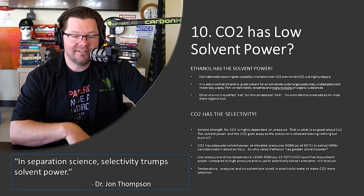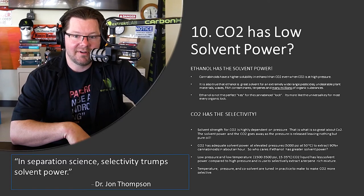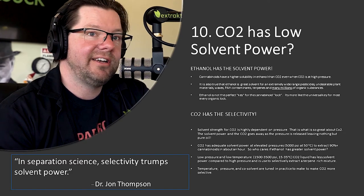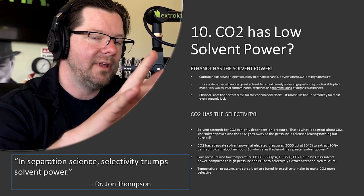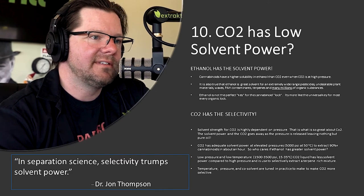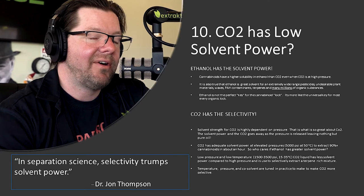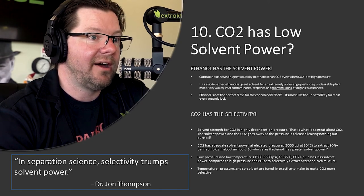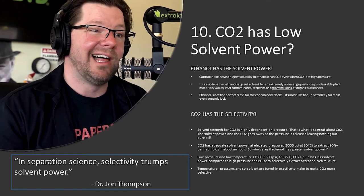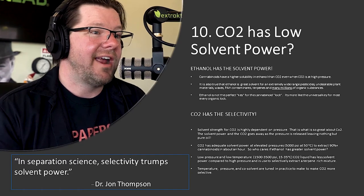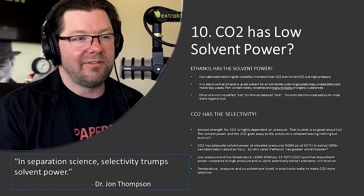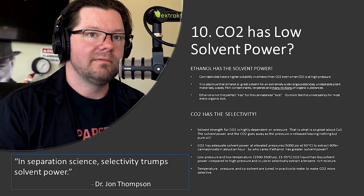Ethanol will dissolve basically everything — pesticides, undesirable plant materials, waxes, poly-aromatic hydrocarbons. As you roll it over your carbon it'll dissolve terpenes and millions of other organic substances. So ethanol does have the solvent power and it's much stronger than CO2, no question. But ethanol is not the perfect key for the cannabinoid lock — it's more like the universal key for every organic lock. That's a selectivity thing, not a solvent power thing.